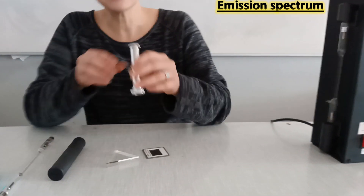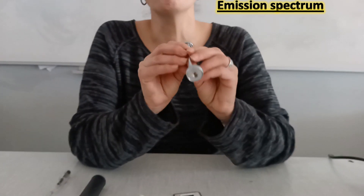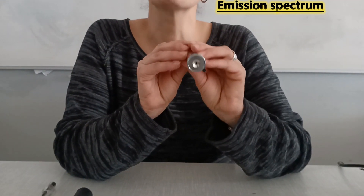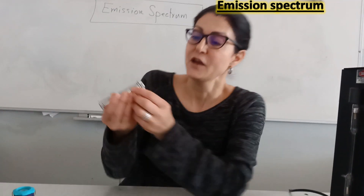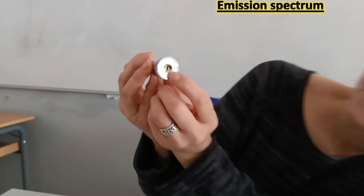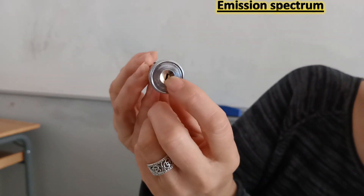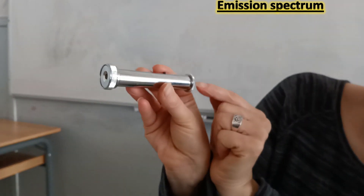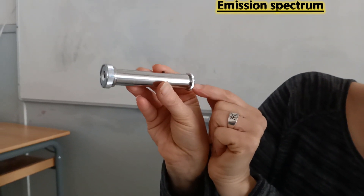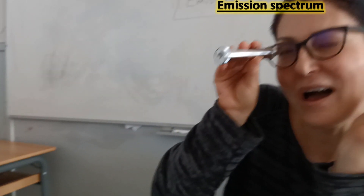I want to use this simple spectroscope in order to observe the emission spectrum of an element. The emission spectrum of an element is the set of wavelengths that constitute the radiation emitted by this element when it is excited. Here we have a slit — light entering the slit passes through the spectroscope to the diffraction grating located in the eyepiece.